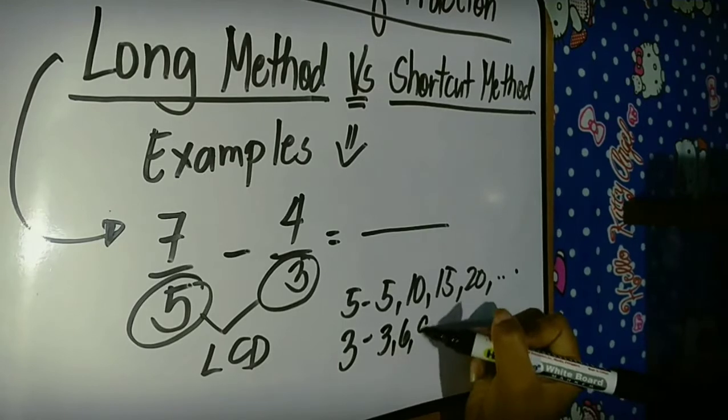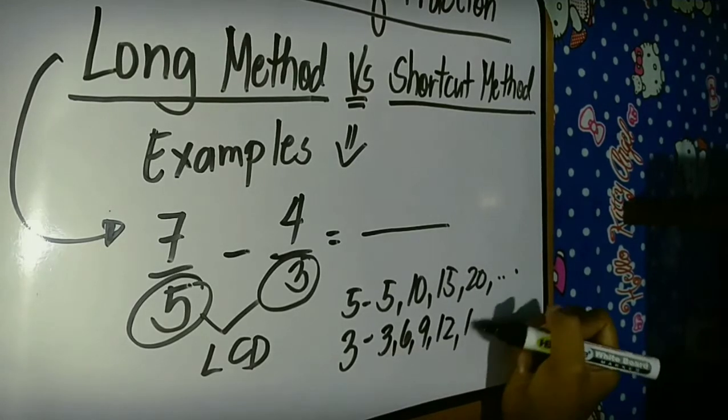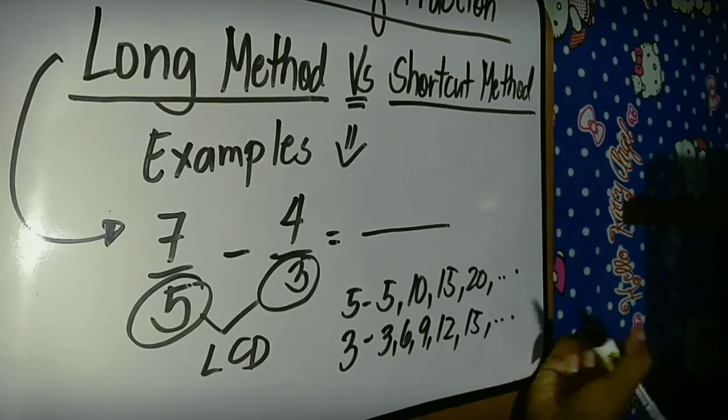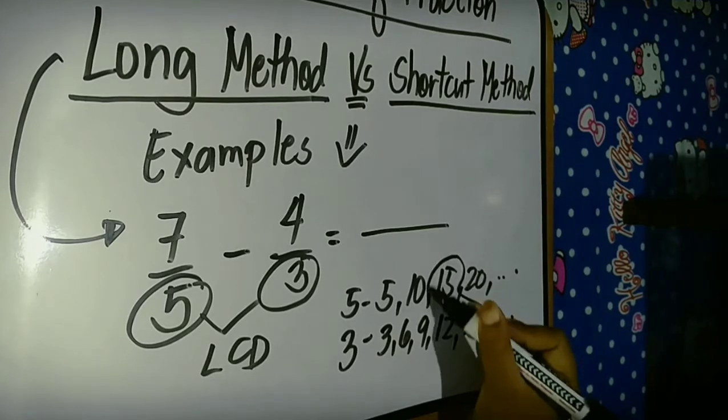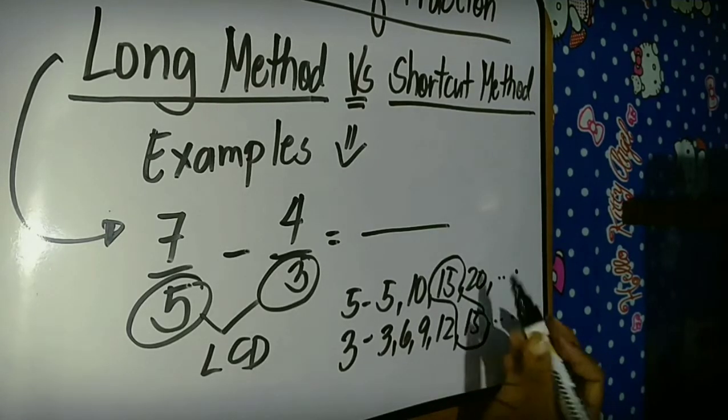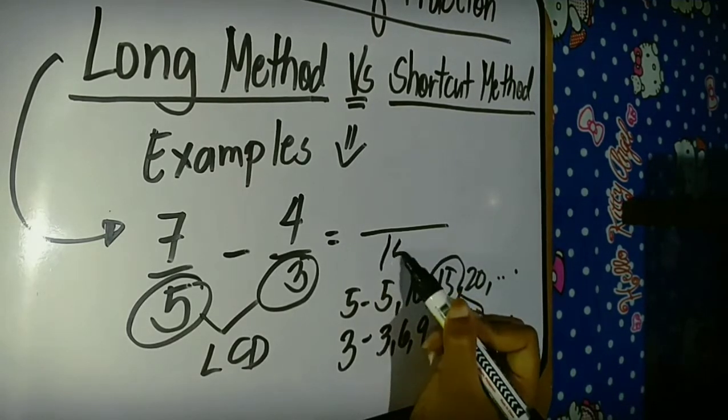The factors of 5 are 5, 10, 15, and 20. And the factors of 3 are 3, 6, 9, 12, 15, and so on. And we get now the LCD, which is 15.